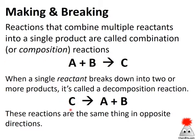If we have a single reactant that's breaking down to form two or more products, that's a decomposition reaction. These are sometimes called compositions because the opposite of a composition is a decomposition, and these two reaction types are really just the opposite process of one another—either multiple things combining to form one product or one thing breaking apart to form multiple products.